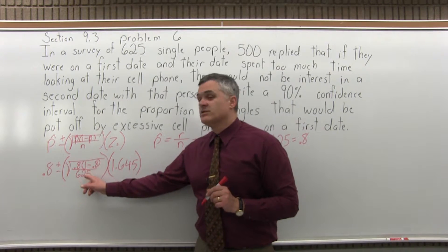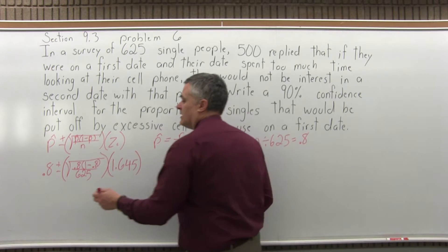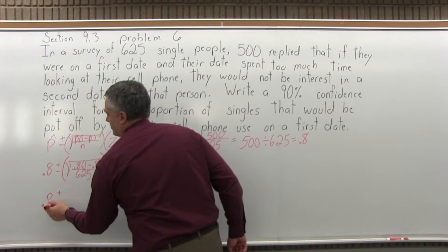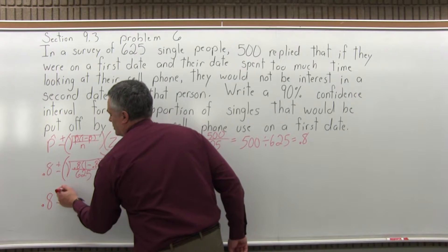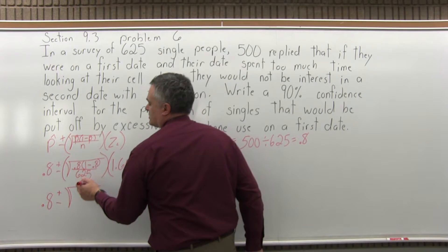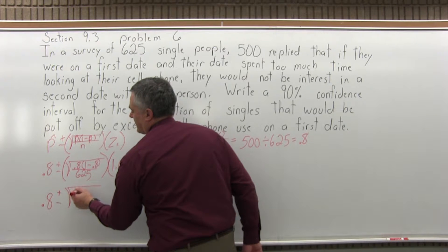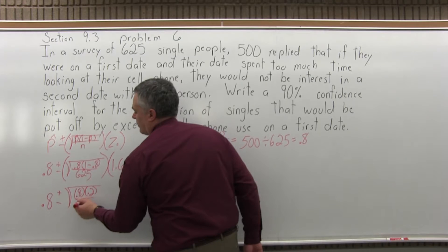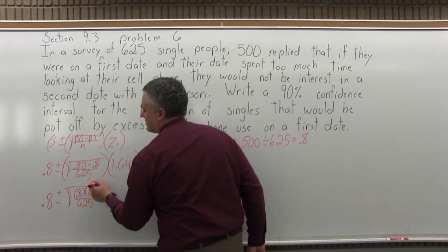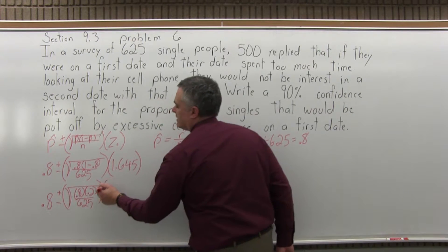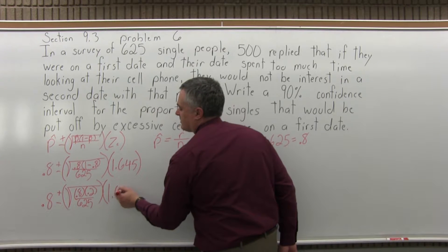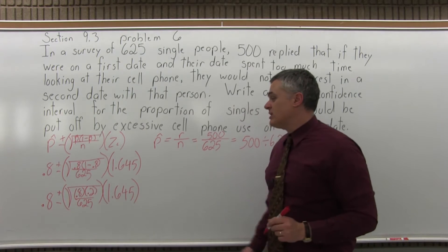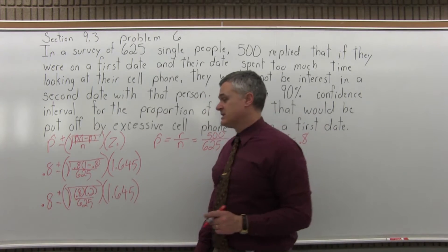We have to start with the work under the square root. So 0.8, plus or minus the square root of 0.8, times 1 minus 0.8, will be 0.8, times 0.2, over 625. And then still times 1.645. So now I can multiply 0.8, times 0.2, I know that's 0.16.